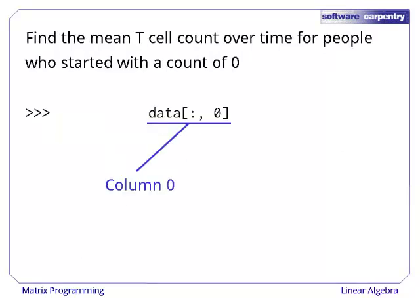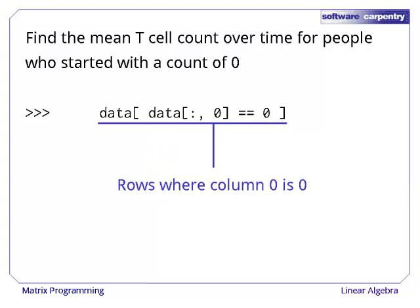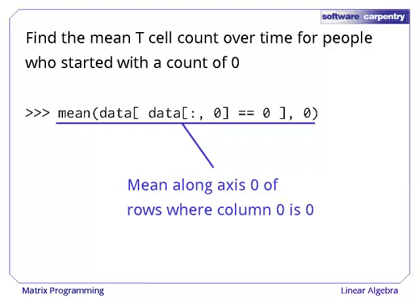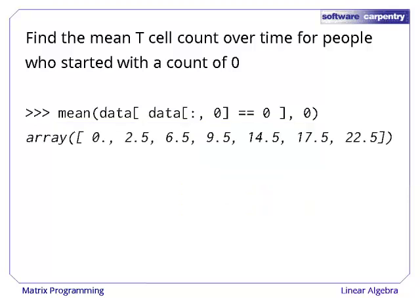Now let's find the mean T cell count over time for those people. Once again, we start by selecting column zero and testing it to create a Boolean mask. Using that mask as a subscript gives us the rows that have zero in the first place. We can now use the mean function along axis zero, i.e. across patients, which gives us the average behavior of patients who started with no responsive T cells at all.